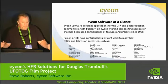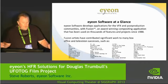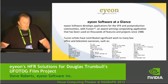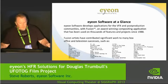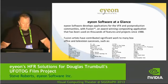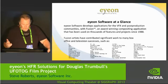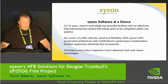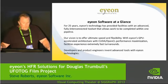With Fusion we've been used on thousands of feature films and projects since 1988. Fusion artists around the world have used this to create such films as Avatar, Independence Day, Iron Man, Hunger Games, Alice in Wonderland, and the X-Men series. Recent ones like White House Down and The Da Vinci Code. For 25 years we've provided facilities with advanced fully interconnected tool sets which allows us to work completely with one pipeline.